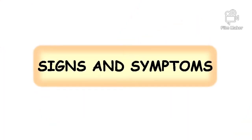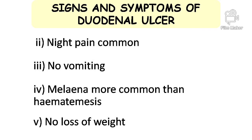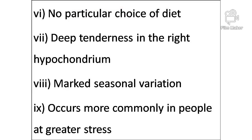Signs and symptoms of peptic ulcer. Signs and symptoms of duodenal ulcer: pain-food-relief pattern, night pain common, no vomiting, melena more common than hematemesis, no loss of weight, no particular choice of diet, deep tenderness in the right hypochondrium, marked seasonal variation.